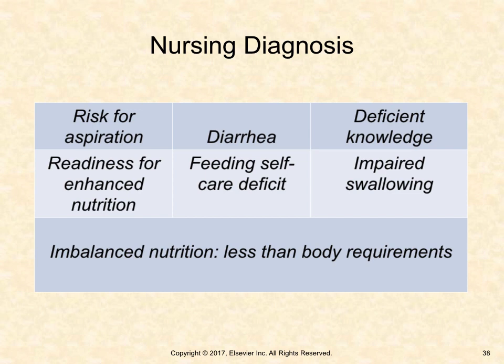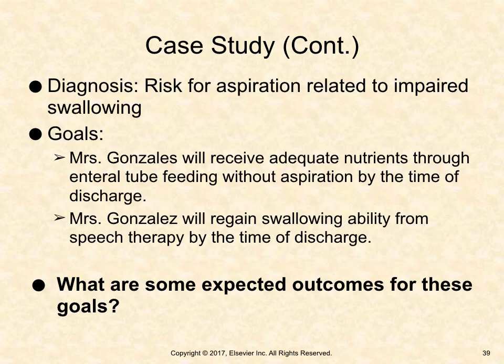Nursing diagnoses may be related to actual nutrition problems such as inadequate intake, or to problems that place the patient at risk for nutritional deficiencies such as oral trauma, severe burns, and infections. Mrs. Gonzalez has a nursing diagnosis of risk for aspiration related to impaired swallowing. Goals include: Mrs. Gonzalez will receive adequate nutrients through enteral tube feeding without aspiration by discharge, and she will regain swallowing ability from speech therapy by discharge.